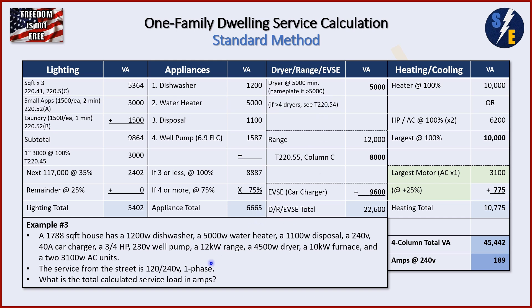Our dryer is 4,500 watts, so 5,000 is our minimum. For our range: a 12,000-watt range. We go to table 220.55, column C, which tells us that for one range we have an 8,000-watt rating. Next, our car charger is 240 volts, 40 amps — same as the last one — so 9,600 VA. Adding these three numbers in bold, we get 22,600 VA for our column total.